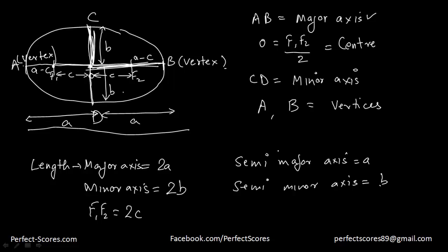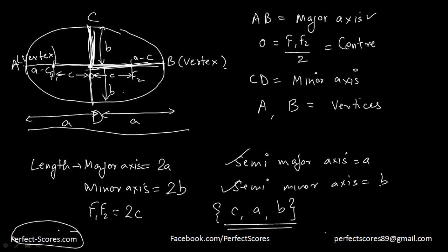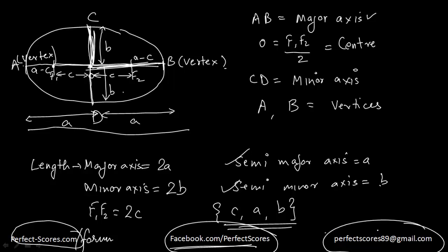So this would be about this video, guys. In the next video we are going to be talking about the relationship between the semi-major and semi-minor axis — we will be coming up with the relationship between C, A, and B. Before we go, the web address is perfect-scores.com. You can ask questions at perfect-scores.com/forum, like us at facebook.com/perfect-scores, and send feedback to perfect-scores89@gmail.com. Thank you very much for watching — I'll see you in the next one. Bye!